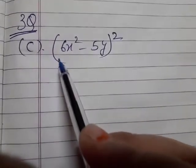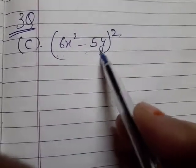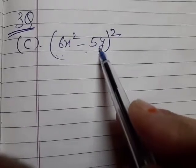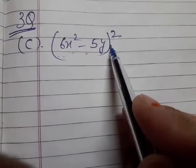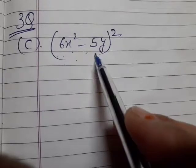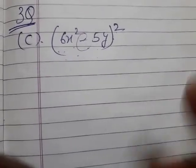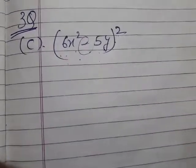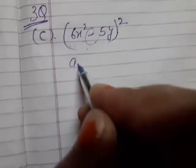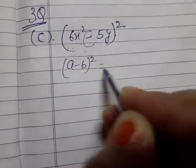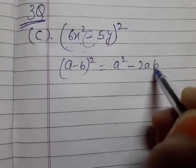Now, third question C part: we have (6x² - 5y)² which is a whole square. We have two identities — (a+b)² and (a-b)² — and here we have minus, so we'll use (a-b)² = a² - 2ab + b².